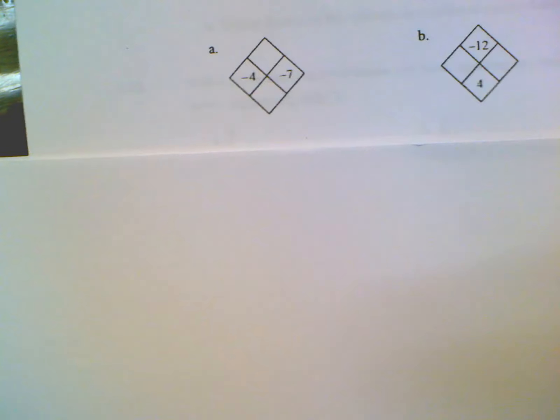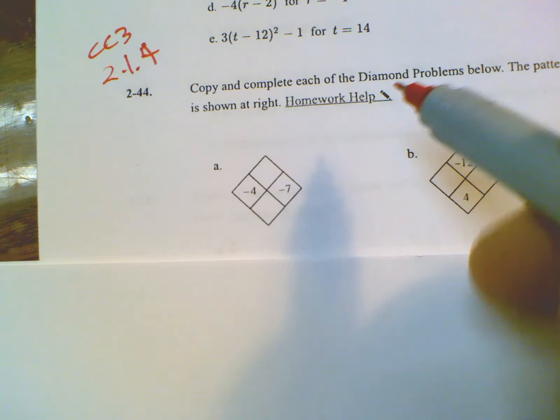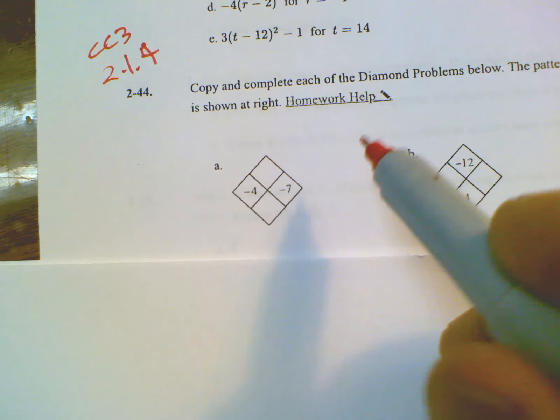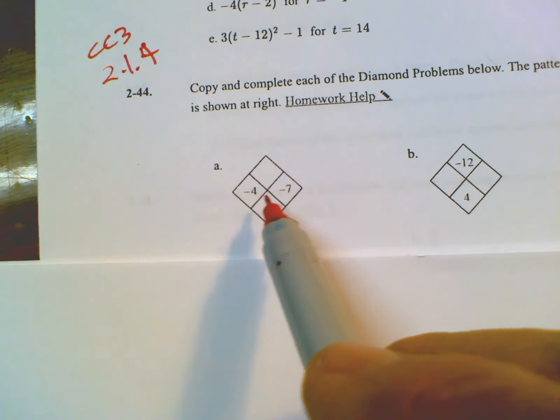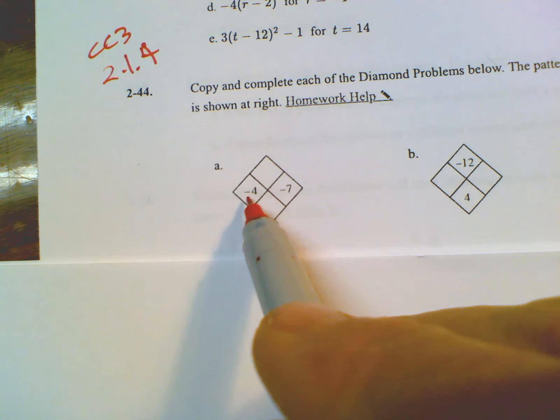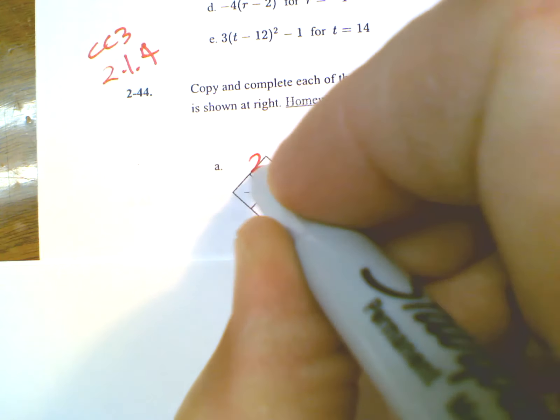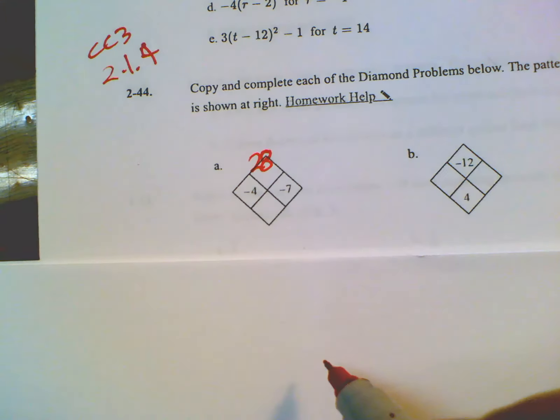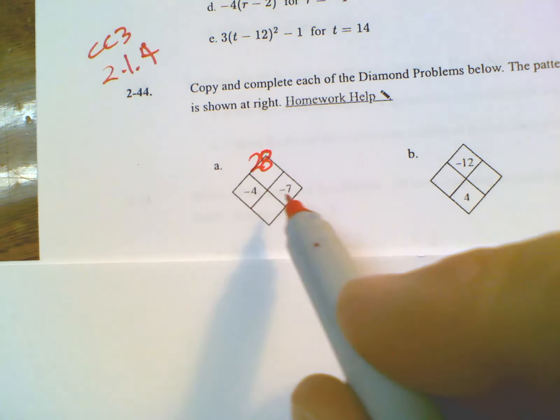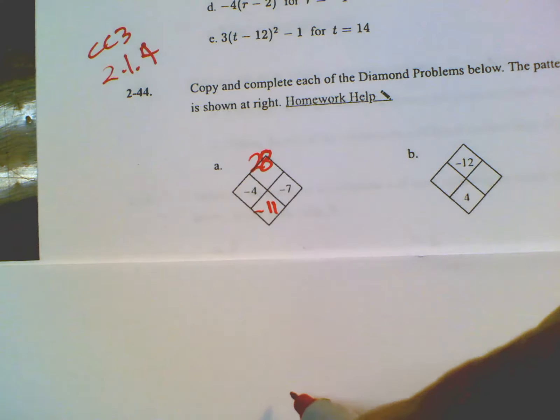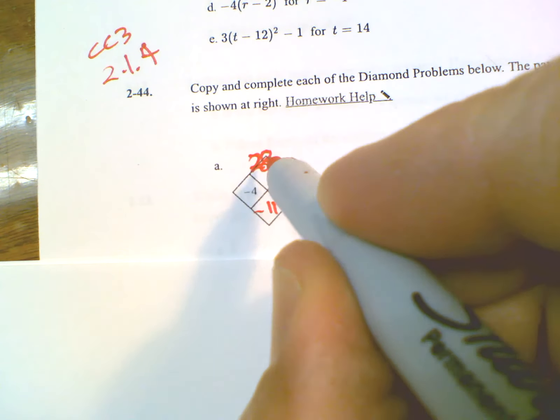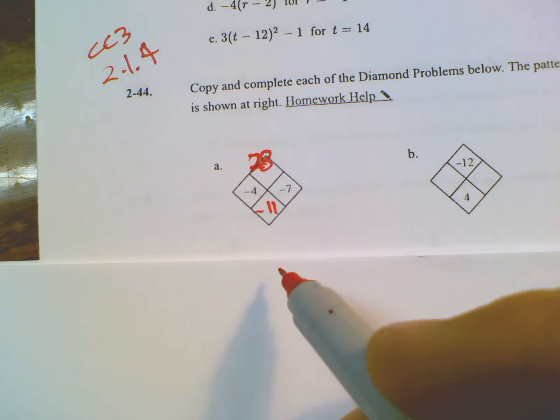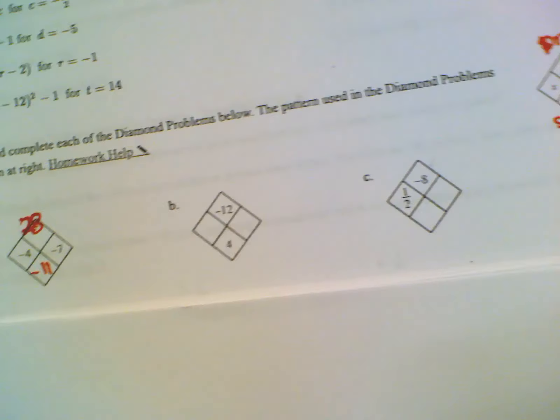So if I've got my two numbers, in this case my product and my sum of these two numbers is what I need to find out. So product: negative four times negative seven, negative times a negative is a positive, so four times seven is 28. And then add those two: a negative four and a negative seven make that a negative 11. So we have 28 on top, negative 11 on the bottom.